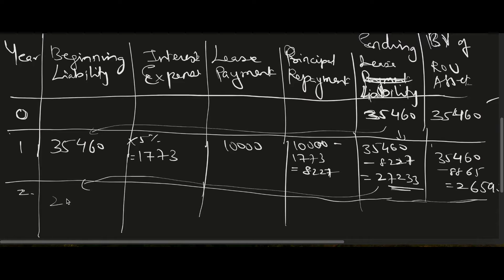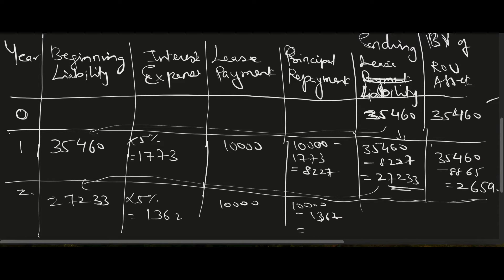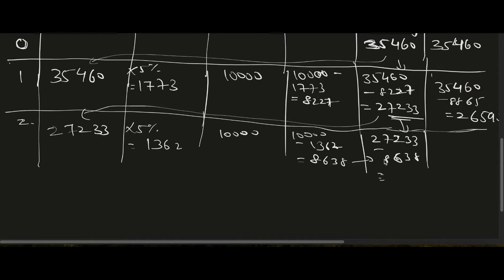For Year 2: opening liability is 27,233. Interest expense = 27,233 × 5% = 1,362. Lease payment is 10,000. Principal repayment = 10,000 minus 1,362 = 8,638. Ending liability = 27,233 minus 8,638 = 18,595.